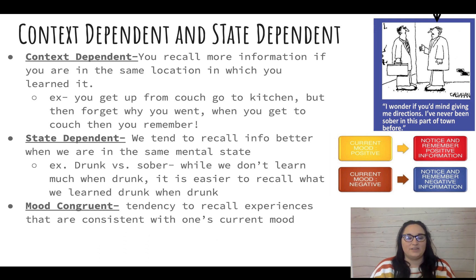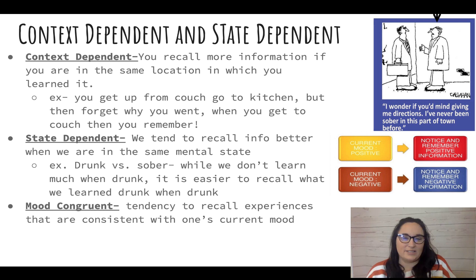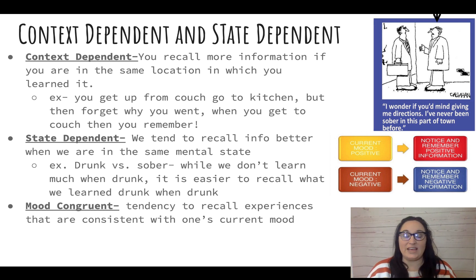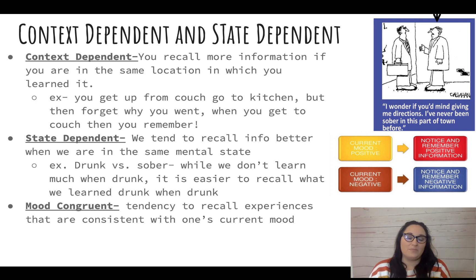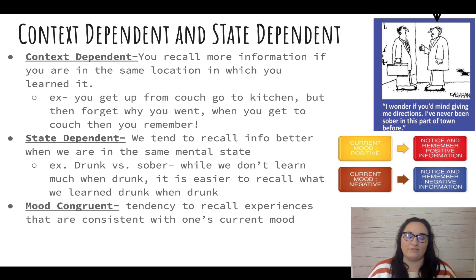There are three different ways what we remember can depend on our mental state. Context-dependent memory means you recall more information if you are in the same location where you learned it — for example, it's easier to take your math test in the math room where you learned that information.